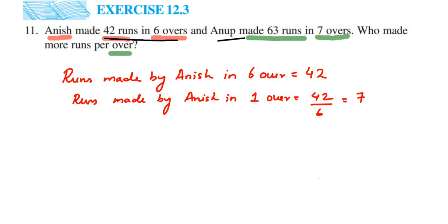Same way we are going to find out for Anoop. So runs made by Anoop in 7 overs is equal to 63. Now we have to find out for 1 over. So runs made by Anoop in 1 over is equal to 63 divided by 7.